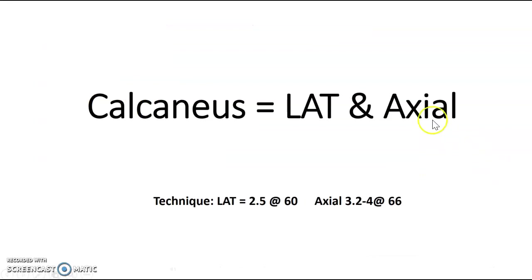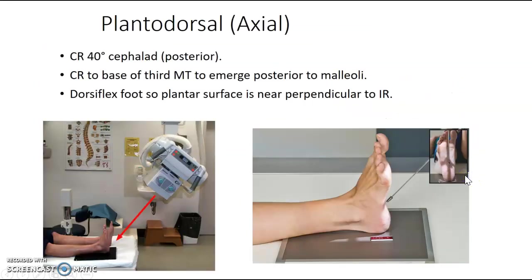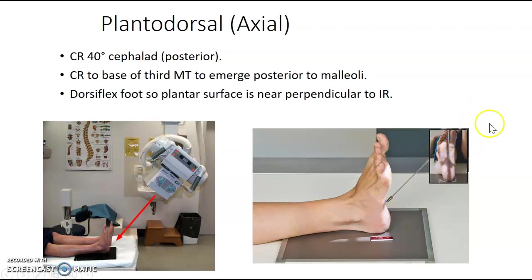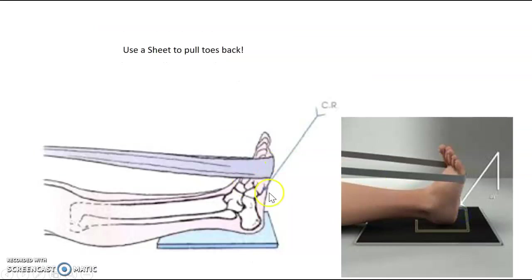For the calcaneus, our routine is a lateral calcaneus and an axial calcaneus. For the axial calcaneus, you want to dorsiflex the foot as much as you can, and angle 40 degrees cephalad — also called the plantar-dorsal view, going through the plantar surface and exiting out the dorsal. You really want to pull the foot back, so use a sheet or tourniquet wrapped around the toes if needed.